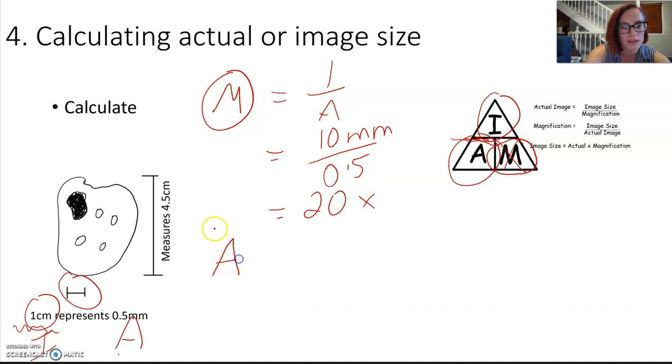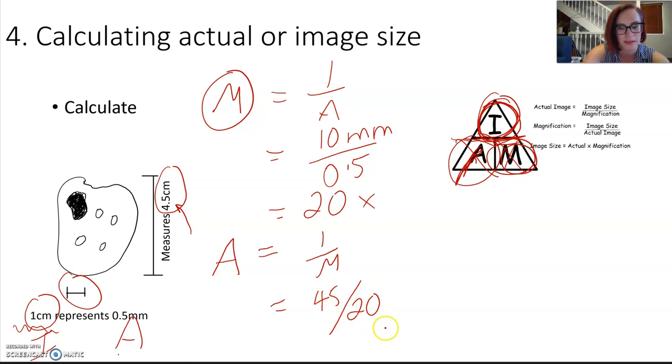So we want to find actual size, given that we only have image size. So we can cover up the A and say, we're left with I divided by M. I divided by M will give us our actual size. Let's do it in millimeters, which is 45 millimeters divided by 20, which is our magnification, and we will get, remember we worked in millimeters, so we're going to get a unit in a final answer in millimeters, and we've got 2.25. There's one I prepared earlier.